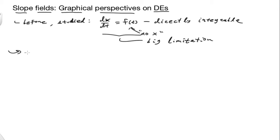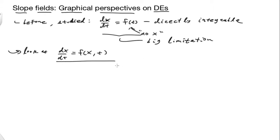So what we want to do now is rectify that situation. We want to look at dx/dt-style equations where we have f of x comma t, so we can have both x and t in there. This is a much broader category of first-order differential equations.